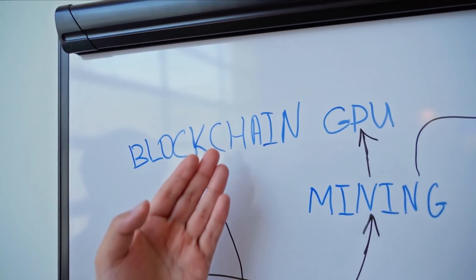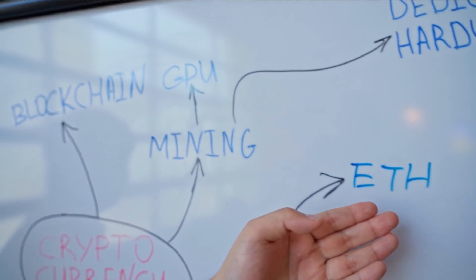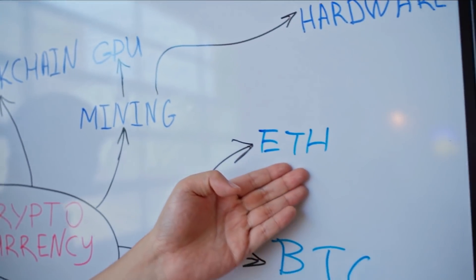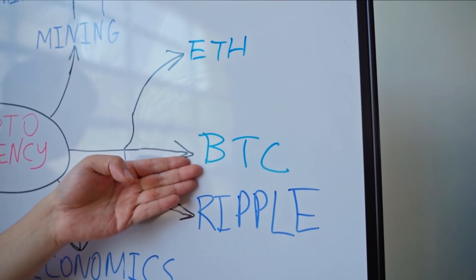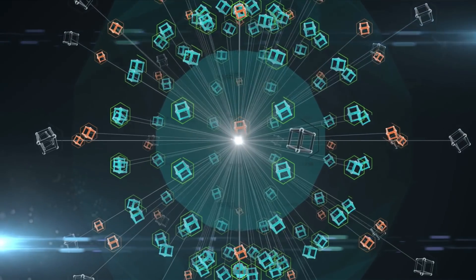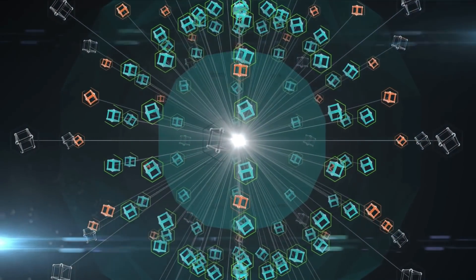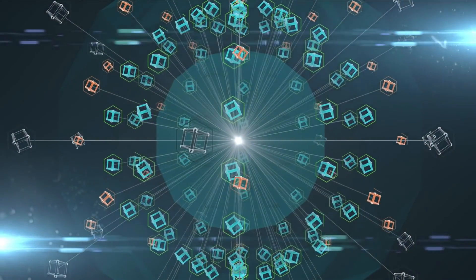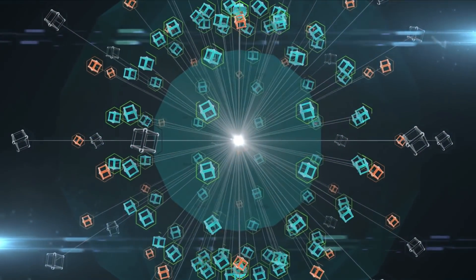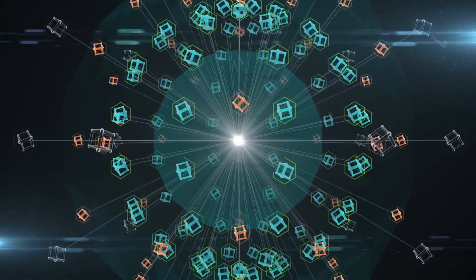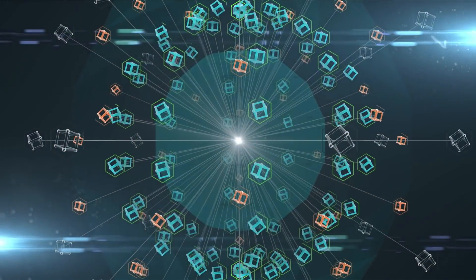Blockchain is central to the appeal and functionality of Bitcoin and other cryptocurrencies. As its name indicates, blockchain is essentially a set of connected blocks or an online ledger. Each block contains a set of transactions that have been independently verified by each member of the network. Every new block generated must be verified by each node before being confirmed, making it almost impossible to forge transaction histories.